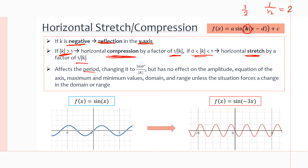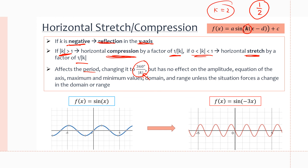This transformation will affect the period, changing it to 360 degrees divided by the absolute value of k. So if k is two, we have a compression by a factor of one-half, and our period becomes half of what it was: 360 ÷ 2 = 180 degrees. There is no effect on amplitude, equation of axis, maximum and minimum endpoints, domain, or range, unless the situation forces a change.